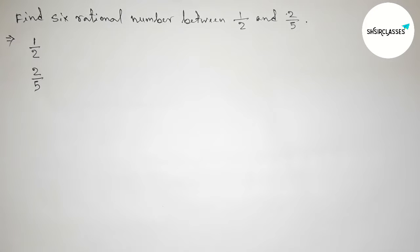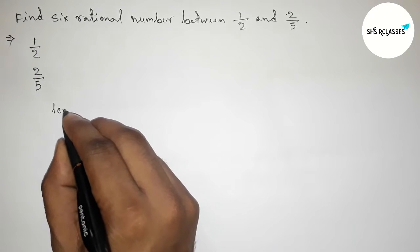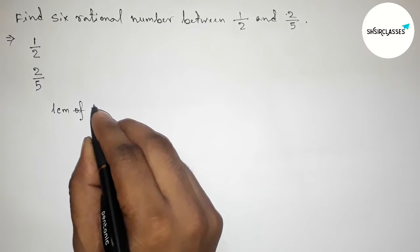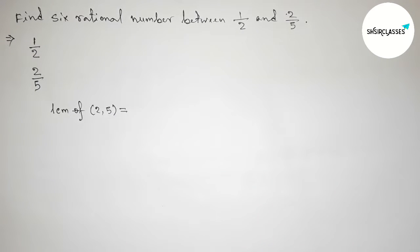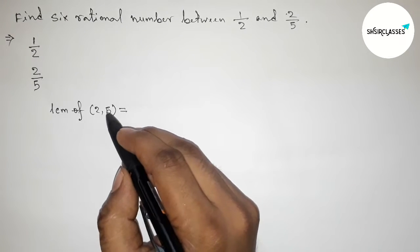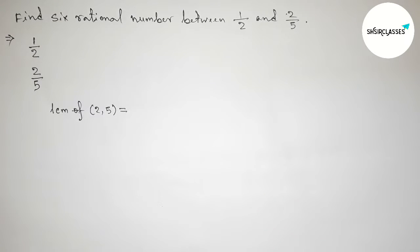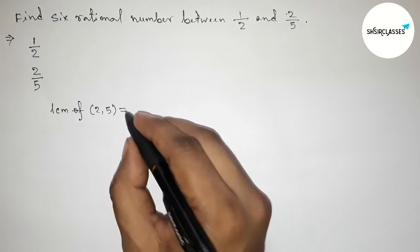First, find the LCM between 2 and 5. So find the LCM of 2 comma 5. Here 2 and 5 are prime to each other, so their LCM will be their product: 2 into 5, that is 10.